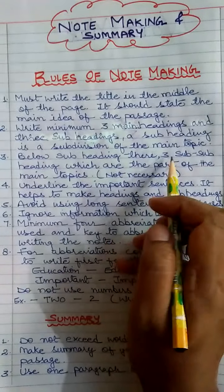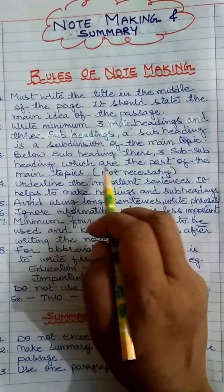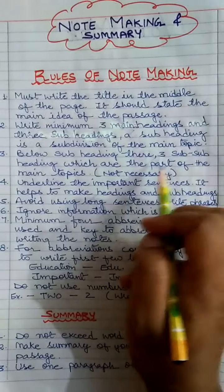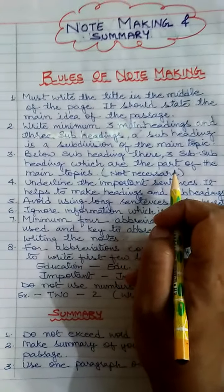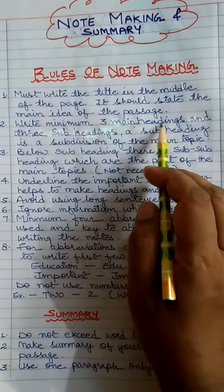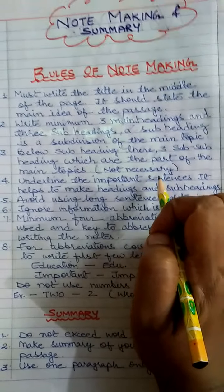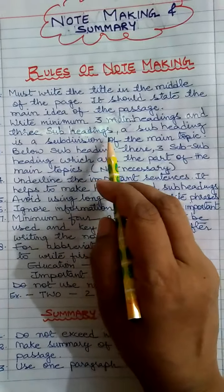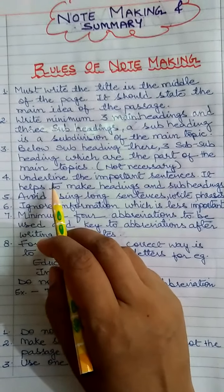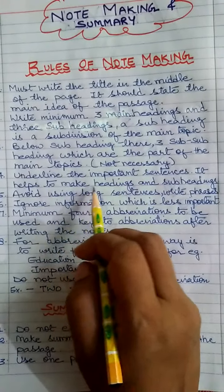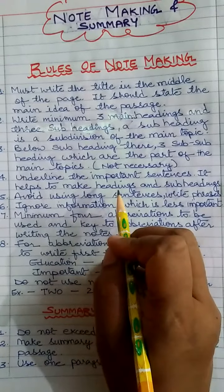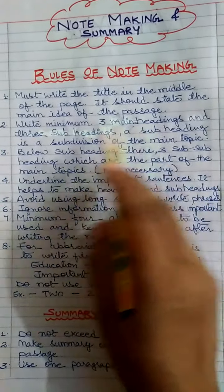The second point is write minimum three main headings and three subheadings. A subheading is a subdivision of the main topic. Below subheadings, sub-subheadings can also be used which are part of the main topics but it's not necessary. I suggest you not to go for these sub-subheadings. After reading the full passage we will find out the main heading paragraph-wise. We can get the heading and under that main paragraph what are the important parts to write in subheadings. When we are reading the passage we need to underline the important sentences. It helps to make headings and subheadings. When we read, we can underline with pencil the main headings and subheadings so it will become easy for us to find them.